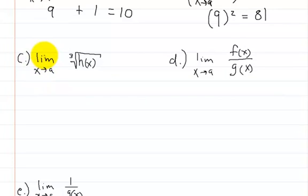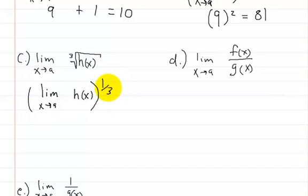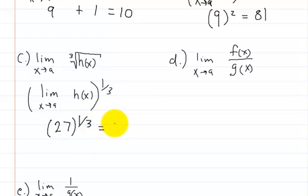Here we have the limit of the cube root of h of x as x approaches a. We take the cube root out first, so we write the cube root of the limit of h of x as x approaches a. The limit of h of x is 27, so 27 raised to the one-third power is equal to 3.